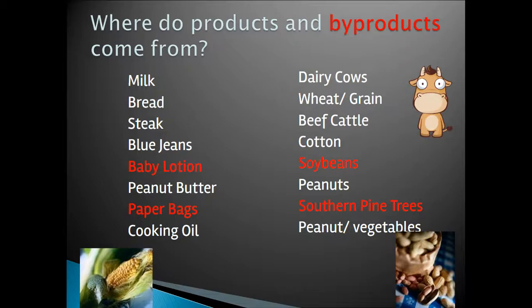You'll also notice, however, there are two items identified in red. That is baby lotion, which is a byproduct that sometimes comes from soybeans, as well as paper bags, which are a byproduct of southern pine trees.